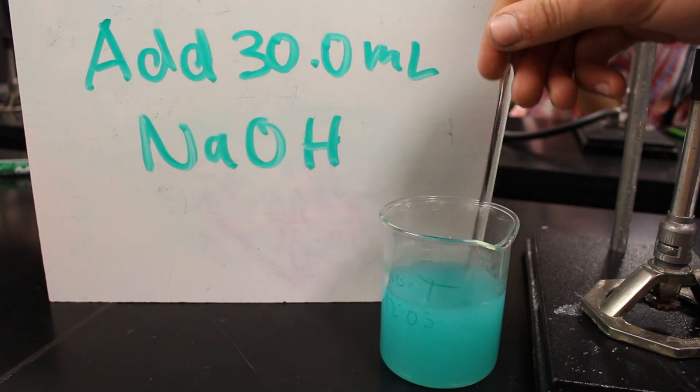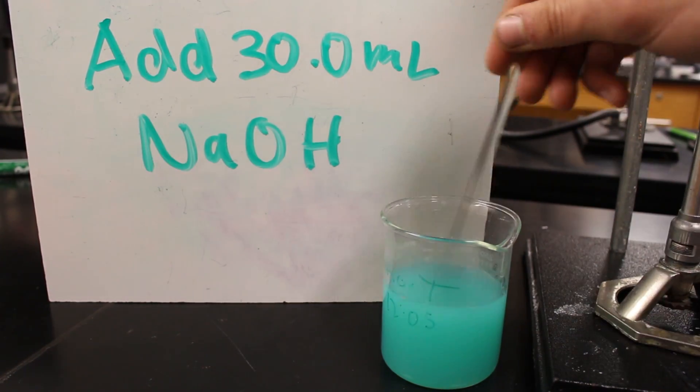With the addition of 30 milliliters sodium hydroxide, the cupric ions react to form copper 2 hydroxide.